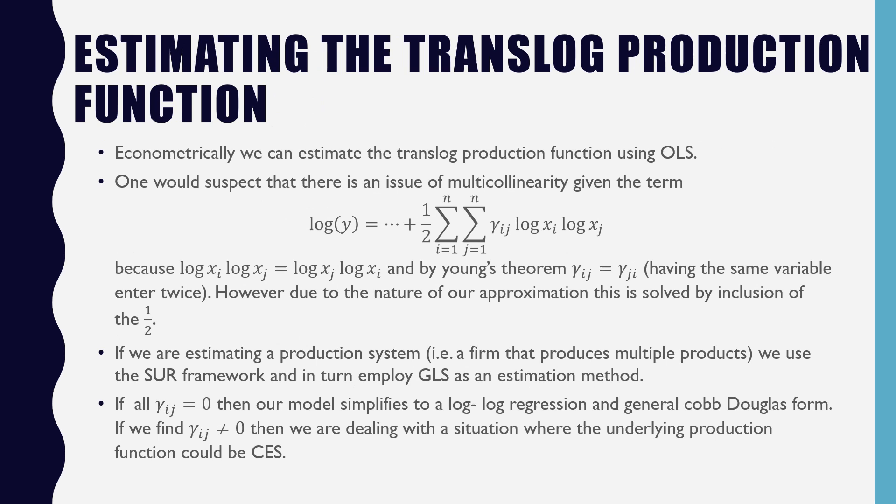Econometrically, we can estimate the translog production function using OLS. One would suspect an issue of multicollinearity given the term one-half times gamma ij log xi log xj, where we're trying to find all the combinations.